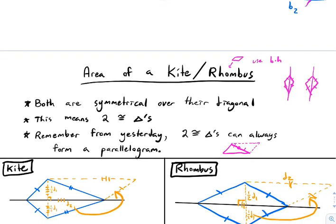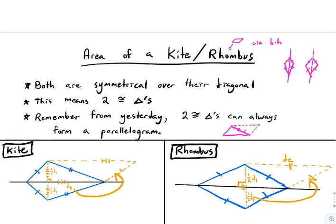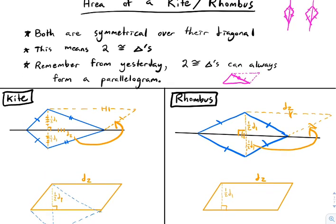Any two congruent triangles can be placed edge to edge to form a parallelogram. So let's take a kite and a rhombus, cut it down the middle symmetrically. I take the bottom triangle, flip it up so it lands on top of itself — two copies of the same triangle. Then just like before, I rotate one around the midpoint 180 degrees, and it ends up completing the parallelogram by landing right here. After we flip it up and rotate it, we get a parallelogram in both cases.